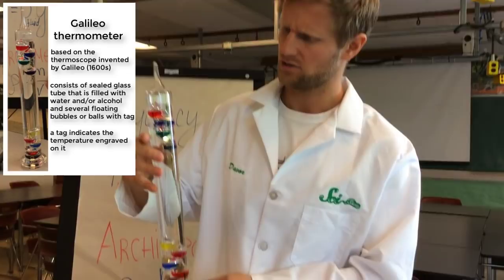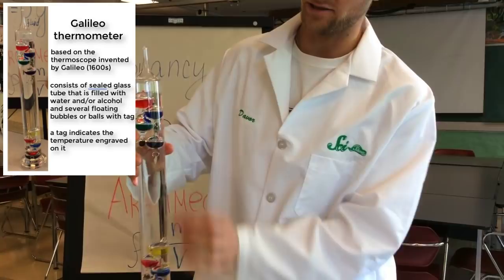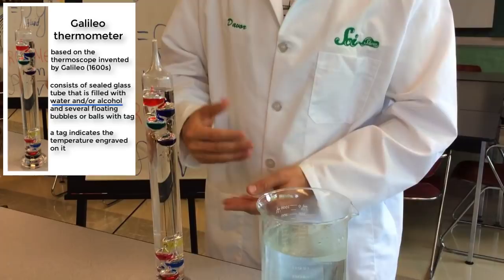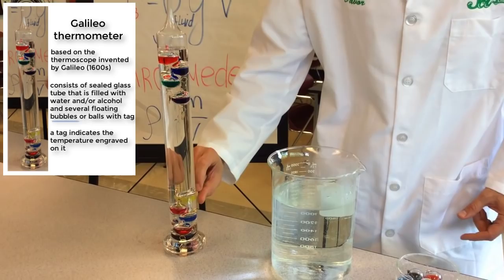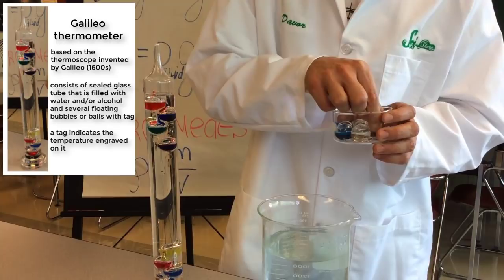So how does it work? Well, as you can see, we have the glass on the outside with a fluid on the inside. This fluid is normally water mixed with ethanol. And inside we have these small little balls, each one with a different colored liquid in it.